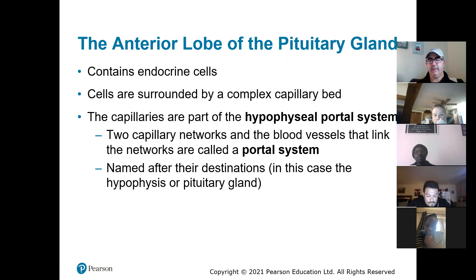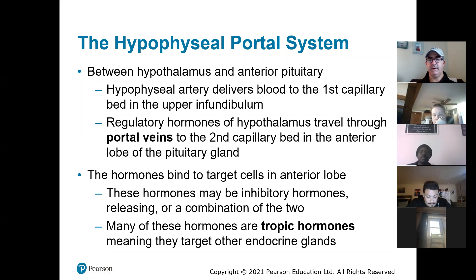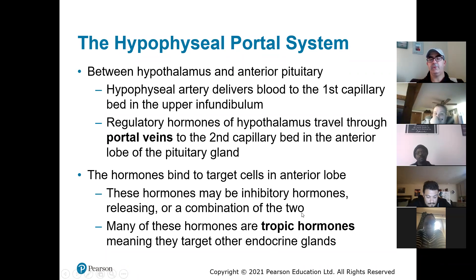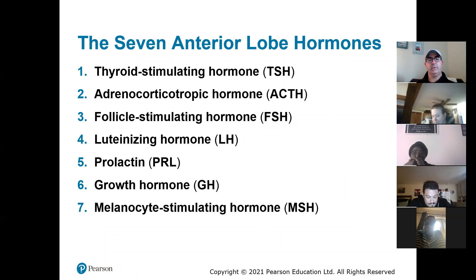The anterior lobe of the pituitary gland receives hormones from the hypothalamus via the hypophyseal portal system — they bind to receptors in the anterior pituitary and trigger it to release hormones. Many of these are called tropic hormones, meaning they trigger the release of other hormones further down the pathway — for example, the anterior pituitary releasing a hormone that causes the thyroid to release another hormone.